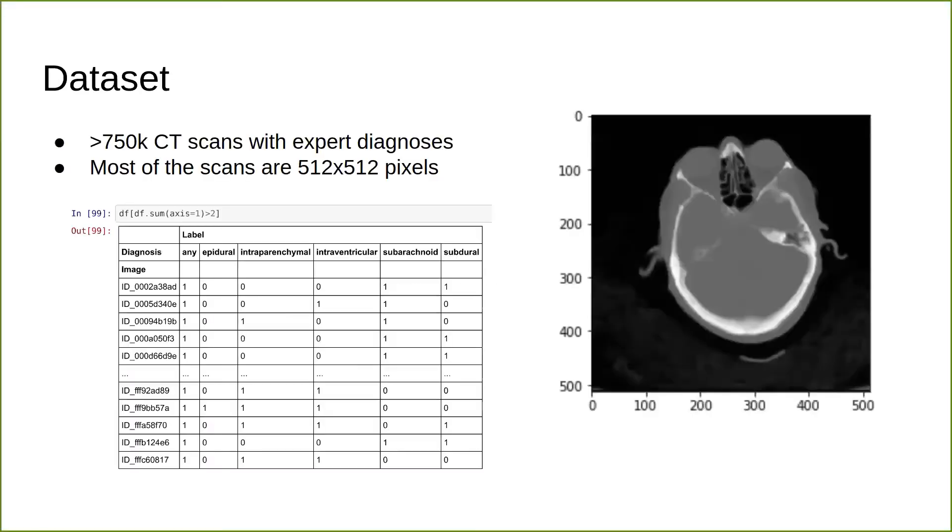Our dataset is provided by the Radiological Society of North America with patient files from four different hospitals and over 750,000 CT scans in the format of DICOM files, which has a cross-sectional image of the brain along with metadata including patient information and specifications of the CT scan itself. There are six patient labels. One that's marked 'any', which says there is or isn't a hemorrhage in the CT scan, and the five other labels specify the type of hemorrhage.